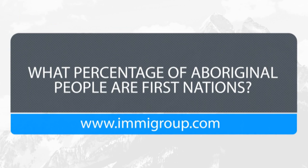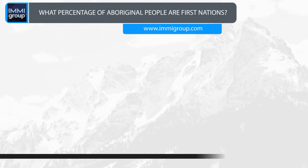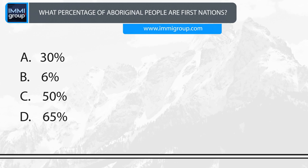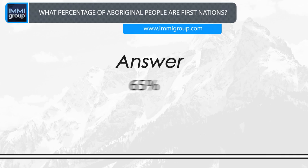What percentage of Aboriginal people are First Nations? A. 30%. B. 6%. C. 50%. D. 65%. Answer: 65%.